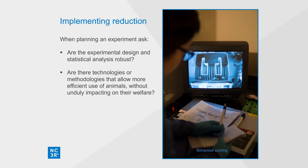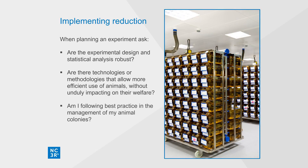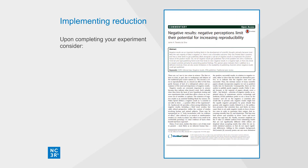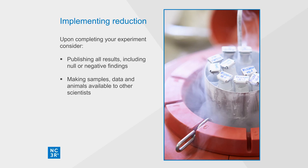It is important to regularly evaluate whether there are new technologies that allow more efficient use of animals without unduly impacting on their welfare. Recent examples include taking micro-samples of blood rather than the larger blood volumes that are commonly taken. More broadly, careful colony management of genetically altered lines can ensure that surplus animals aren't produced. Remember, there is also much that can be done even after a study has been completed to avoid unnecessary animal use — this includes publishing all results, including negative or null findings, and ensuring samples, data and animals are made available to other scientists.